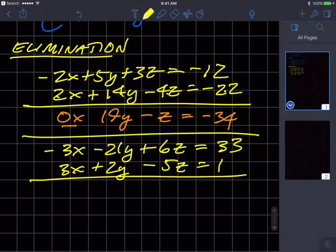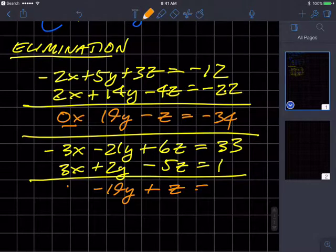Now I'm going to add these two equations to get this new second orange one. Add these, I'm going to get 0x. I'm going to get negative 19y. I'm going to get plus 1z, and I'm going to get 34.